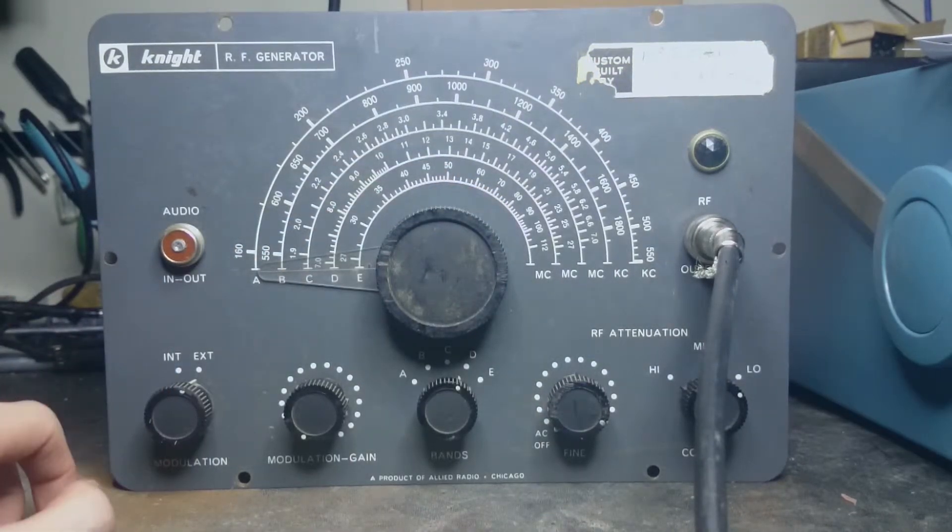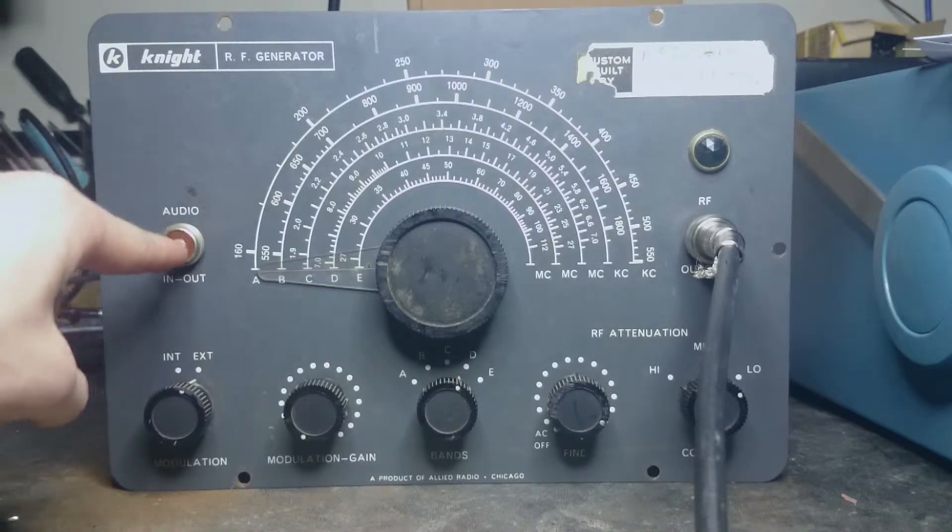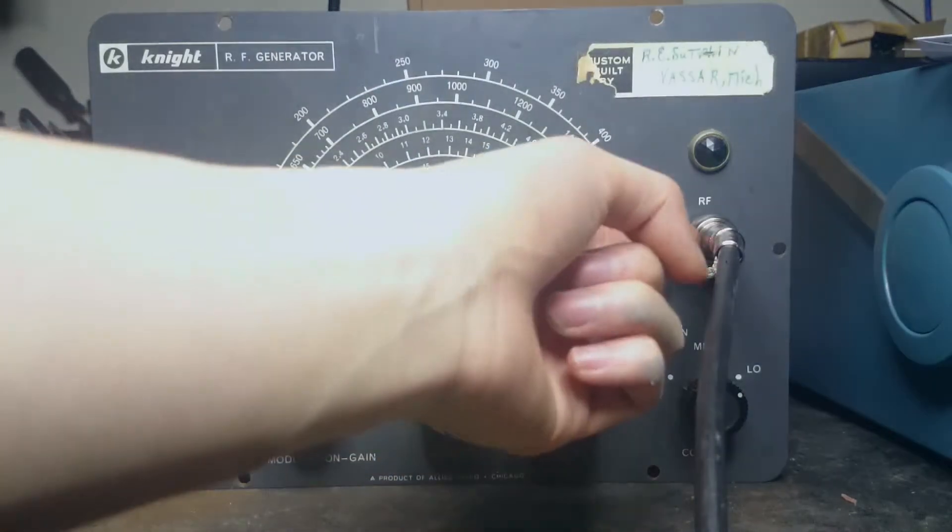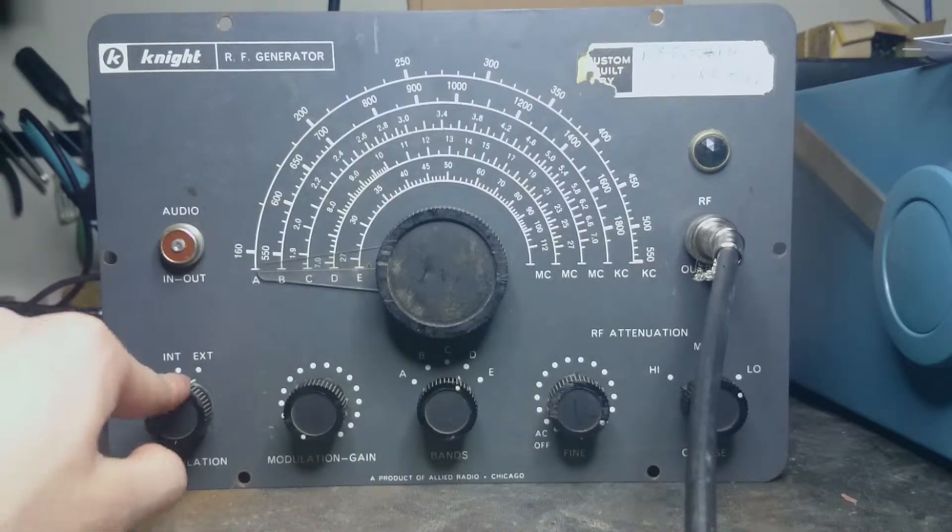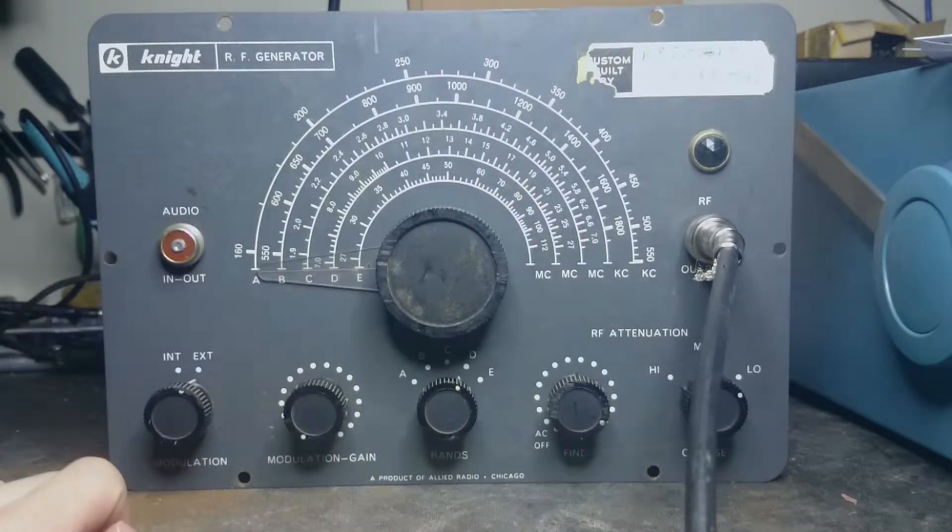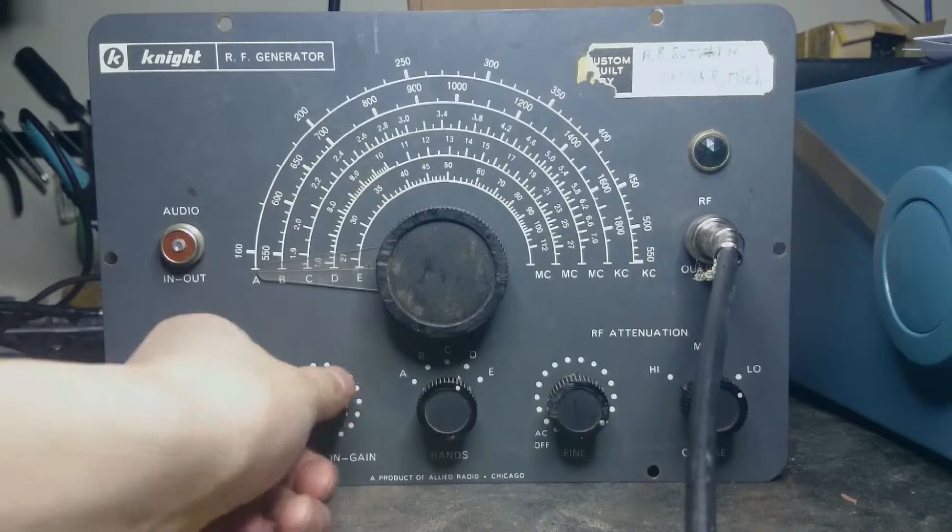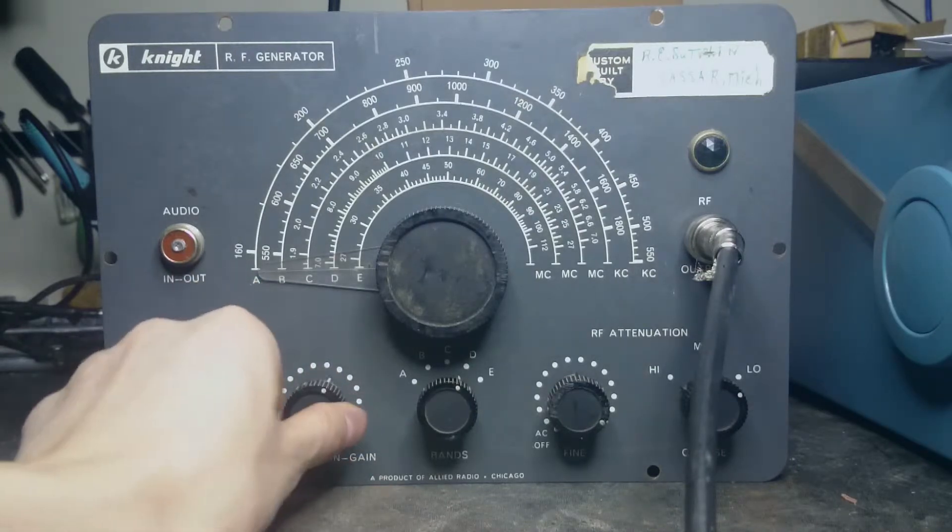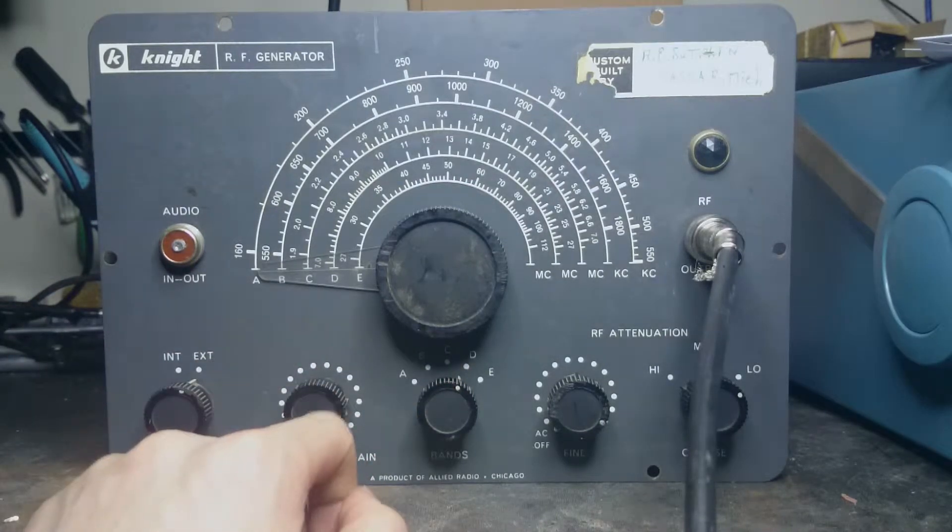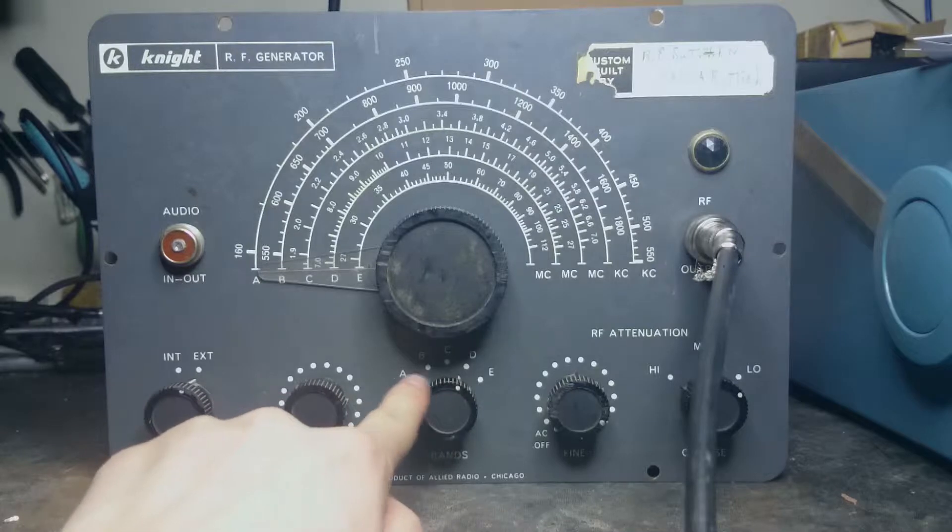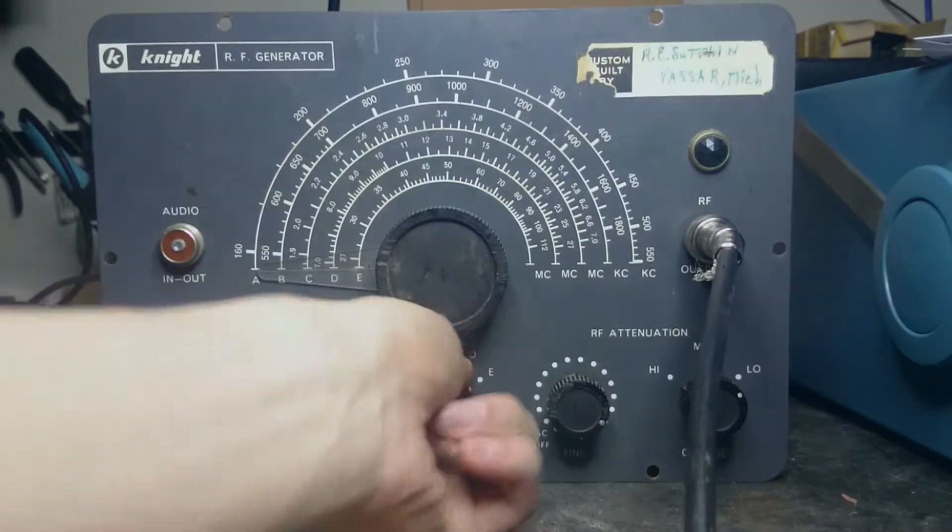There are five knobs down at the bottom. This one controls the modulation. You can either have modulation from inside the unit or feed a modulation signal in here that modulates your RF signal which outputs on this cable. For normal operation, you'll select internal. Modulation gain tells you how much modulation you want.